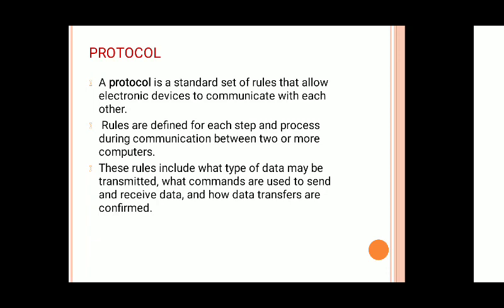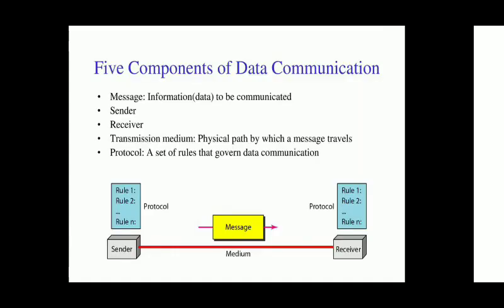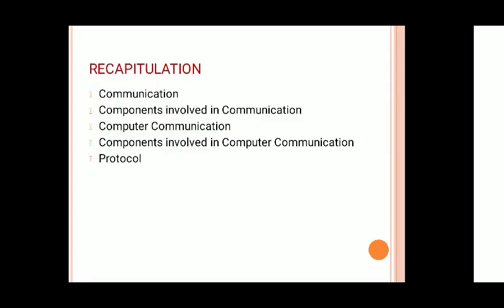A protocol may define data format, coding schemes, and the sequence in which data is transferred among devices. To summarize, the five components of data communication are: the message itself, a sender device, a receiver device, a transmission medium (the physical path by which a message travels), and a protocol (the set of rules that govern data communication). Without a protocol, two devices may be connected but cannot transfer or exchange data.